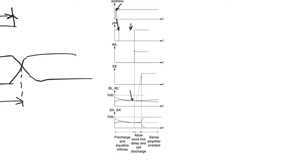Once pre-charge has finished, we disable the pre-charge signal phi and enable the word line. When we enable the word line, we have to wait until the word line signal has reached the last cell at the end of the array. Then we wait until that cell has developed enough delta V so that we can enable the sense amplifier. The sense amplifier will then very quickly generate a very large delta V between SA and SA bar, which is read out on the SRAM's output data bus.